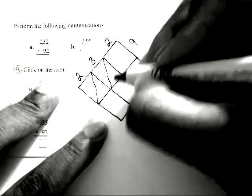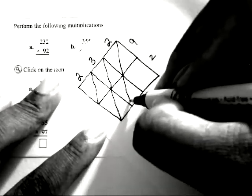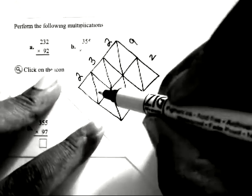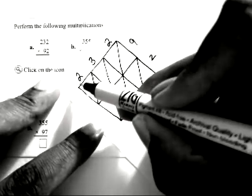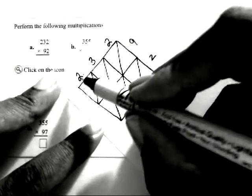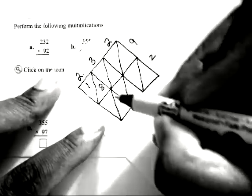The diagonals will be drawn in like this. Now what you're going to do here is multiply each digit on the top by each digit on the far right. Like 2 times 9, that's 18. The 1 goes here and the 8 goes there.